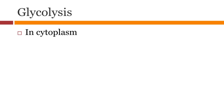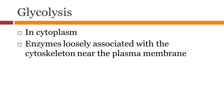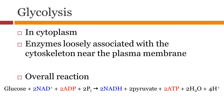Glycolysis happens in the cytoplasm. It is facilitated by enzymes which are loosely associated with the cytoskeleton near the plasma membrane. Here is the overall reaction: you produce 2 ATP and 2 NADH. You also produce 2 molecules of pyruvate, which is further broken down.